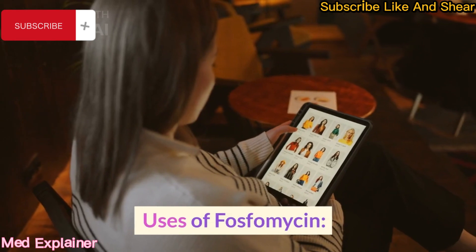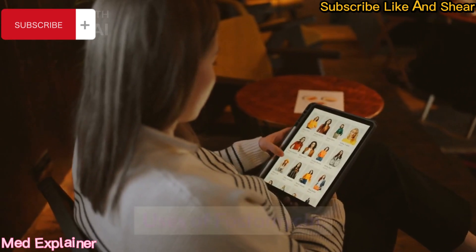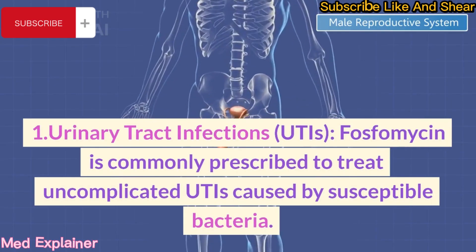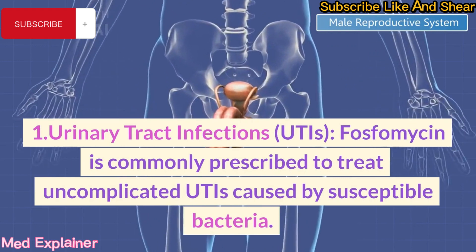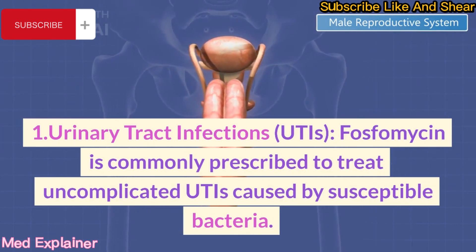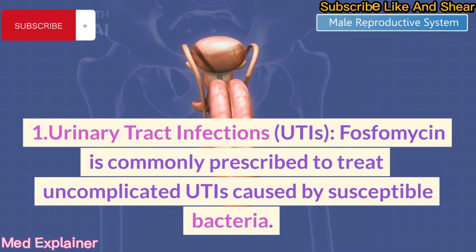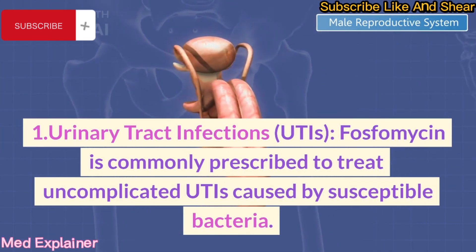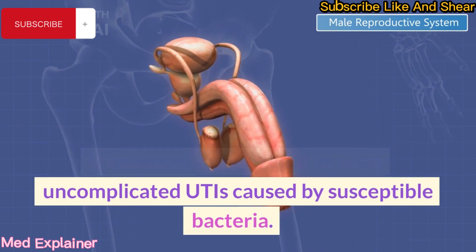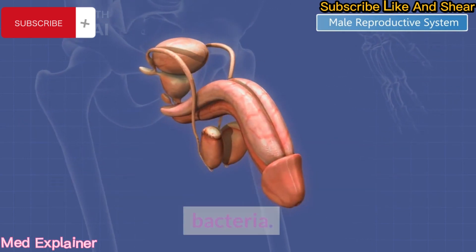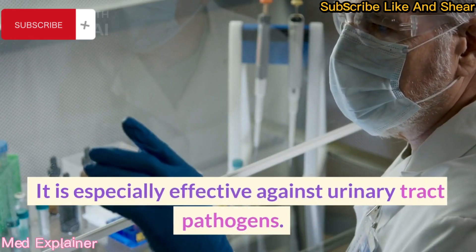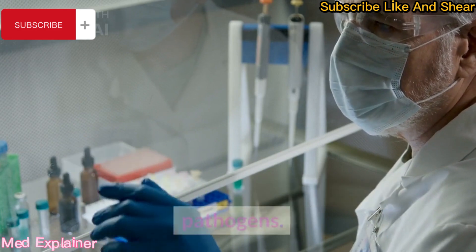Uses of Phosphomycin. Urinary tract infections (UTIs): Phosphomycin is commonly prescribed to treat uncomplicated UTIs caused by susceptible bacteria. It is especially effective against urinary tract pathogens.